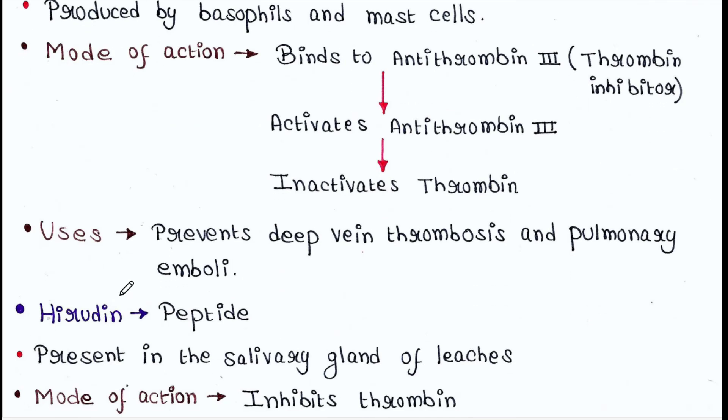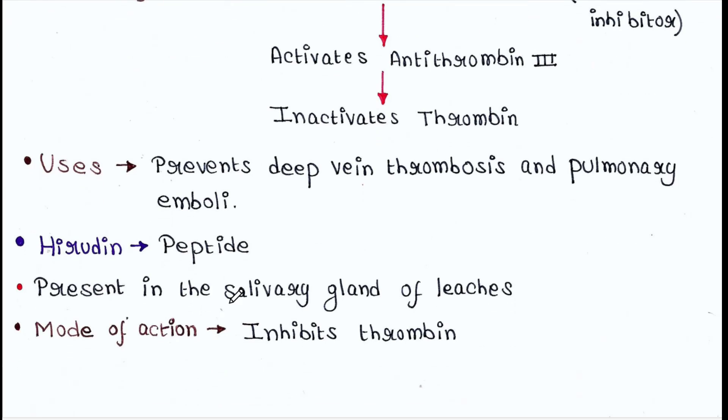Hirudin is a peptide present in the salivary gland of leeches. Mode of action: it inhibits thrombin.